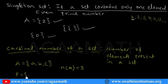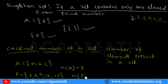For example, if P equals {3, 6, 9, 12, 15}, what is the number of elements present in set P? 1, 2, 3, 4, 5 — so n(P) = 5. That is how we denote the cardinal number of a set — it tells us the number of elements present in a set.